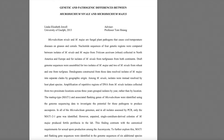Microdochium nivale and M. majus are fungal plant pathogens that cause cool temperature diseases on grasses and cereals. Nucleotide sequences of four genetic regions were compared between isolates of M. nivale and M. majus from Triticum aestivum wheat collected from North America and Europe, and for isolates of M. nivale from turfgrasses from both continents. Draft genome sequences were assembled for two isolates of M. majus and two of M. nivale from wheat and one from turfgrass.